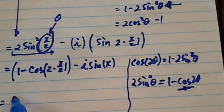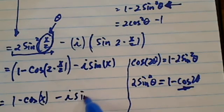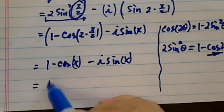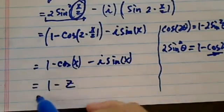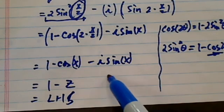All right, and then let's do one more step. We have 1 minus cosine of x minus i sine of x. And this is equal to 1 minus z. It's equal to left-hand side. All right, have a confident day.